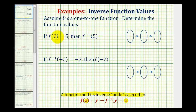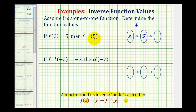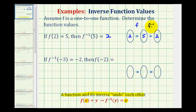So if f of two equals five, two is the input into f and five is the output. If we wanted to show this mapping — letting this be function f — the input would be two and the output would be five. Then to determine f inverse of five, notice how the output of f is becoming the input into f inverse. Therefore, f inverse will return the original value of two. Notice f and f inverse undo each other because the original input into f and the output of f inverse are the same.